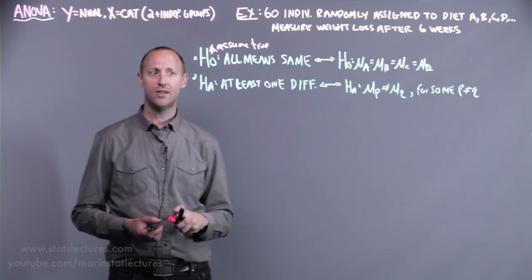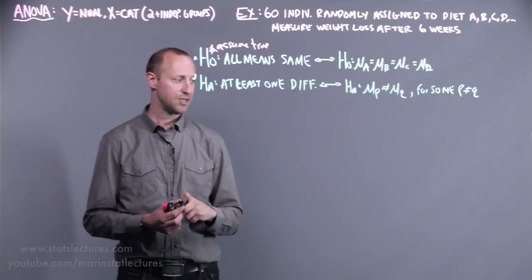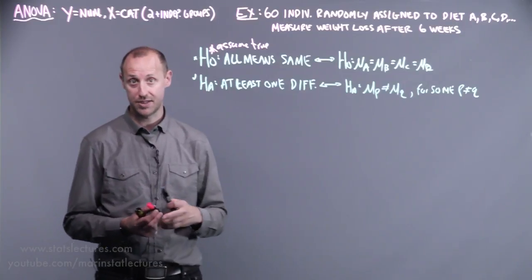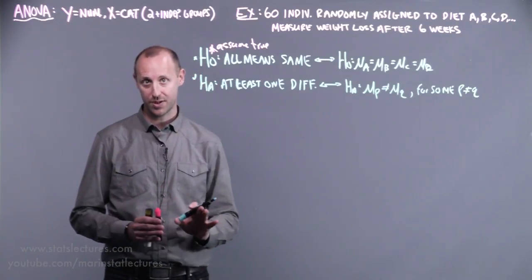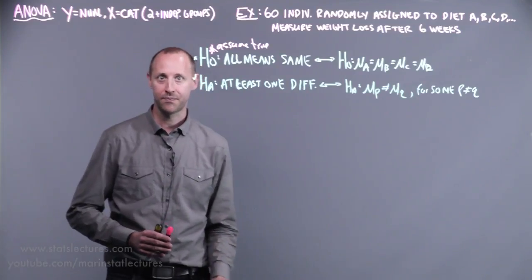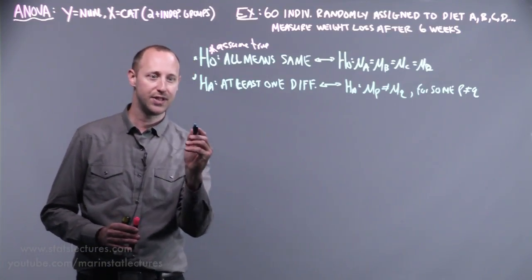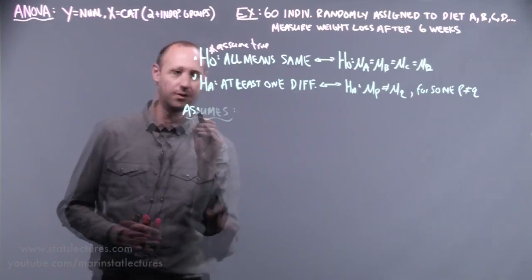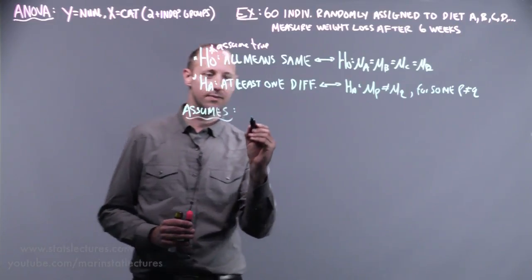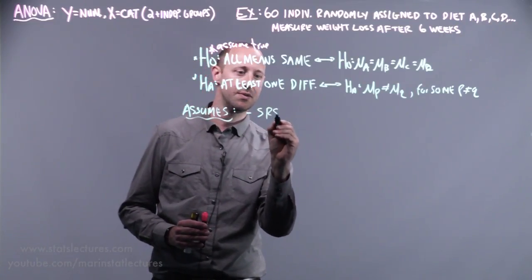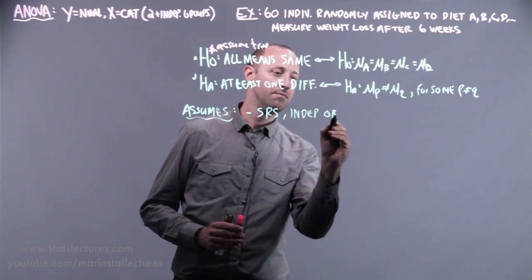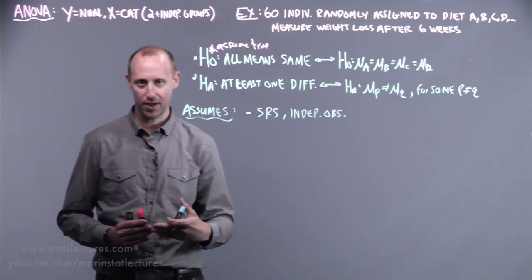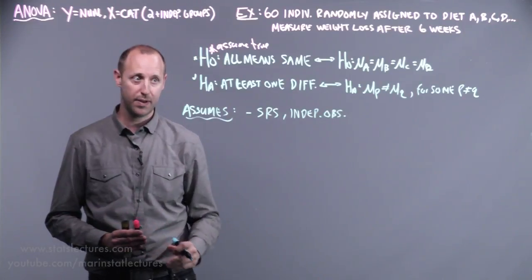Before getting into the mechanics of the test, let's spend a moment talking about the assumptions. This is another parametric approach, or sometimes called large sample approach, and it has the same general set of assumptions. To work with one-way analysis of variance, we're going to assume we have a simple random sample. We have independent observations—person one, person two, person three, they're all independent of each other.